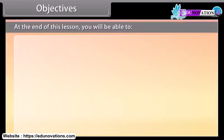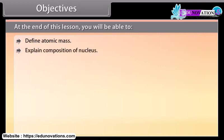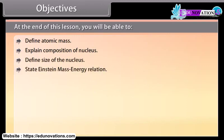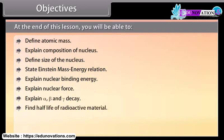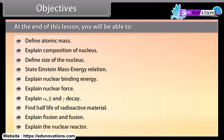Objectives: At the end of this lesson, you will be able to define atomic mass, explain composition of nucleus, define size of the nucleus, state Einstein mass-energy relation, explain nuclear binding energy, explain nuclear force, explain alpha, beta and gamma decay, find half-life of radioactive material, explain fission and fusion, and explain the nuclear reactor.